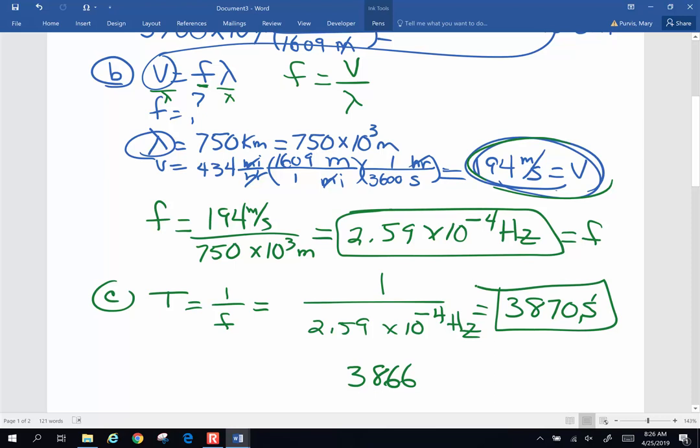One more time, where did that unit come from? This is going to be 1 divided by hertz, which is 1 over seconds. Invert and multiply, seconds over 1. That's where seconds come from. That's the long one. Let's go to problem number 10.